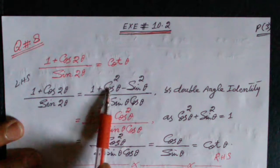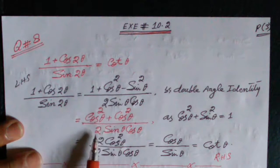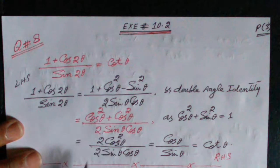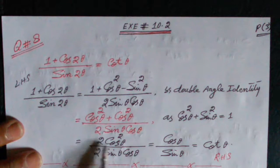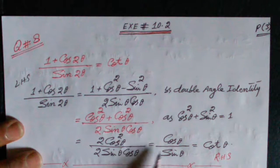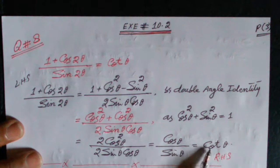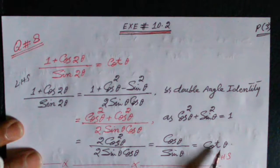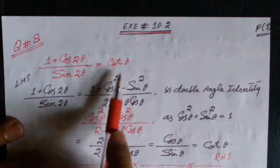We get cos²θ plus cos²θ divided by 2 sinθ cosθ. Adding these two terms gives 2cos²θ divided by 2 sinθ cosθ. Cancel 2 with 2 and cosθ with cosθ, and we get cosθ divided by sinθ, which is equal to cotangent θ — our required result.